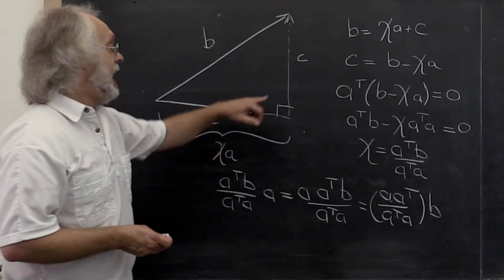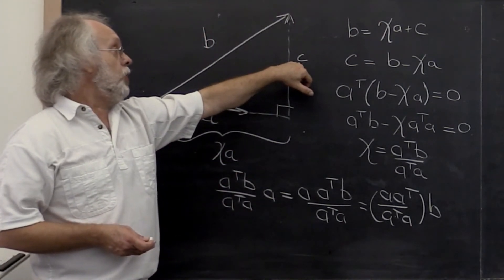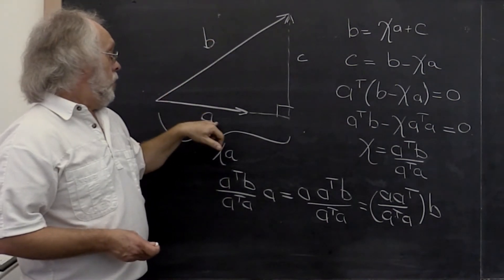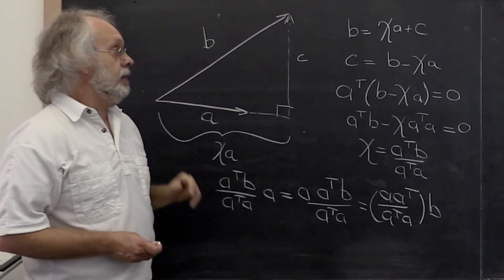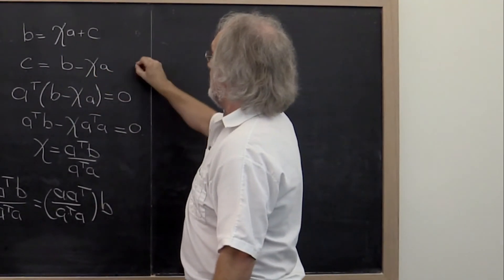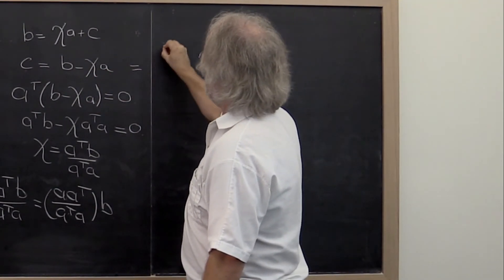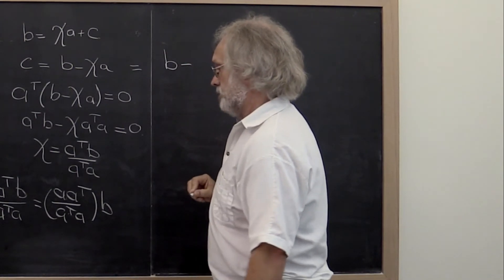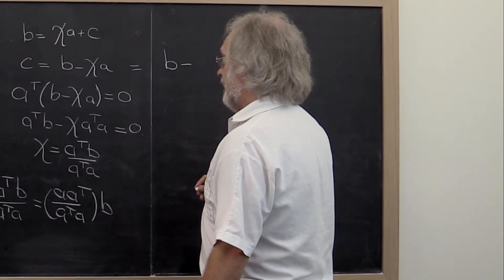Now we can ask ourselves, what's the component of B orthogonal to A? That we get from the fact that C is equal to B minus chi times A.